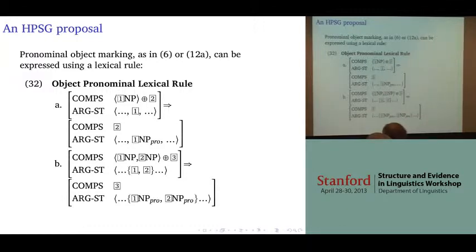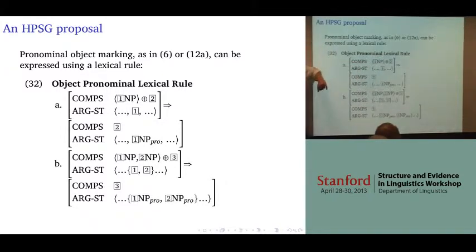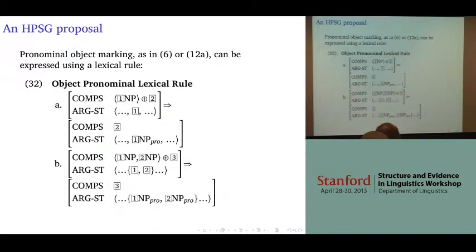There have been a number of different devices proposed for that. Here I've given two kinds of group-force lexical rules that take complements, remove items from the complements list, and specify the corresponding arguments as being pronominal. With a little fancy technology, we could do a Miller-and-Sag version of this with types that would require two rules but have basically the same effect.